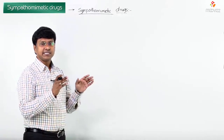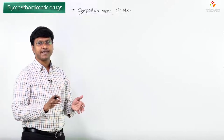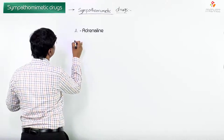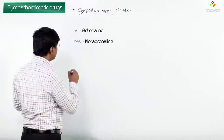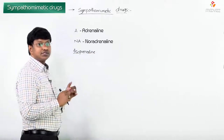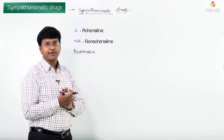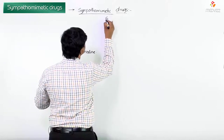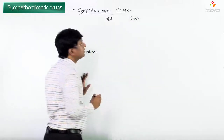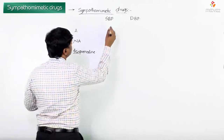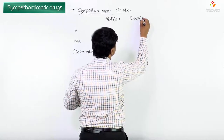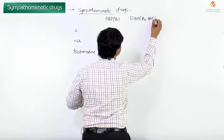Let me compare the effects of three catecholamines — adrenaline, noradrenaline, and isoproterenol — on systolic blood pressure, diastolic blood pressure, and heart rate. On systolic blood pressure, the action is via beta-1 receptors. On diastolic blood pressure, the action is via beta-2 receptors as well as alpha-1 receptors.